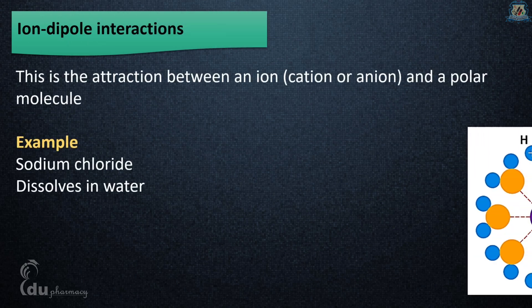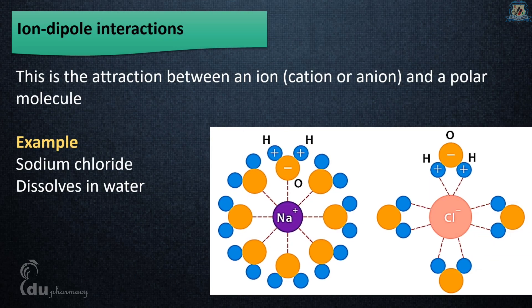Ion-dipole interactions: the attraction between an ion (cation or anion) and a polar molecule. For example, when sodium chloride dissolves in water, polar water molecules are attracted toward sodium ion and chloride ion. This process is also called hydration of ions.